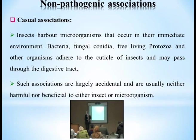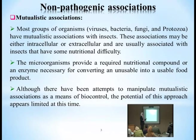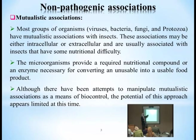Most groups of organisms — including viruses, bacteria, fungi, and protozoa — have mutualistic associations with insects. These associations may be either intercellular or extracellular and are usually associated with insects that have some nutritional difficulties. This relationship exists not only with bacteria but also with viruses, fungi, and other microorganisms.